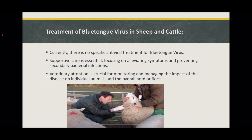Currently there is no specific antiviral treatment for animals infected with blue tongue virus. BTV is a viral disease and treatment primarily focuses on supportive care and managing clinical symptoms. Veterinary intervention is crucial to provide supportive care for affected animals. Supportive care measures may include fluid therapy to address dehydration, nutritional support, and medication to alleviate fever and pain. Close monitoring of infected animals is essential to track the progression of the disease and intervene promptly if complications arise. Isolation of infected animals helps prevent the spread of the virus to susceptible individuals within the herd or flock.